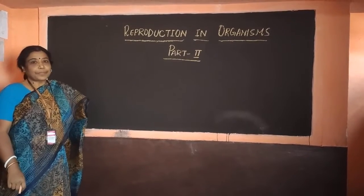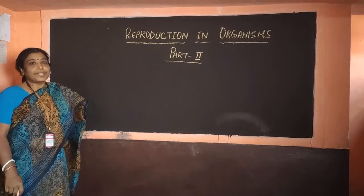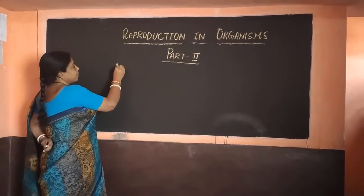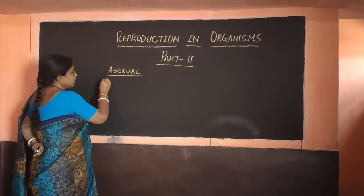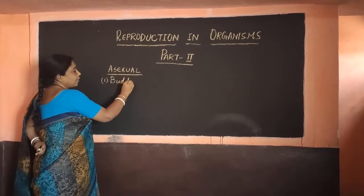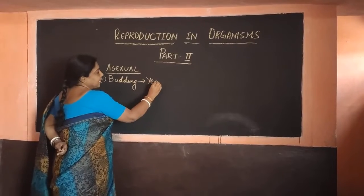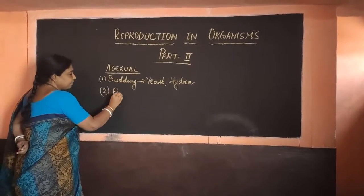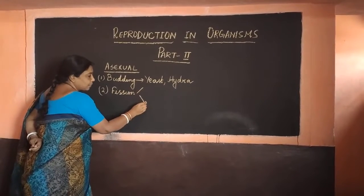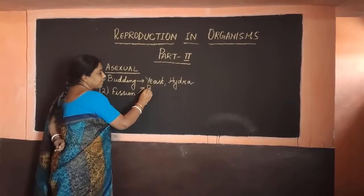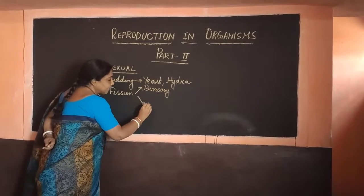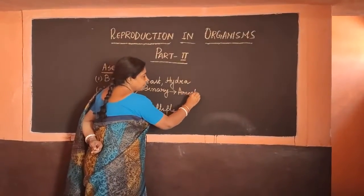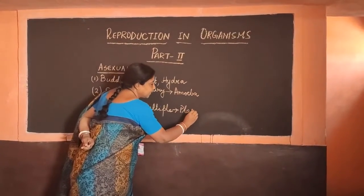Hello children, how are you all? In the first part of reproduction in organisms, I have already told you all the methods for asexual reproduction. So again, a brief recapitulation: we dealt with budding, which took place in yeast as well as in hydra. The next method was fission — binary fission, seen in amoeba, and multiple fission, seen in plasmodium.